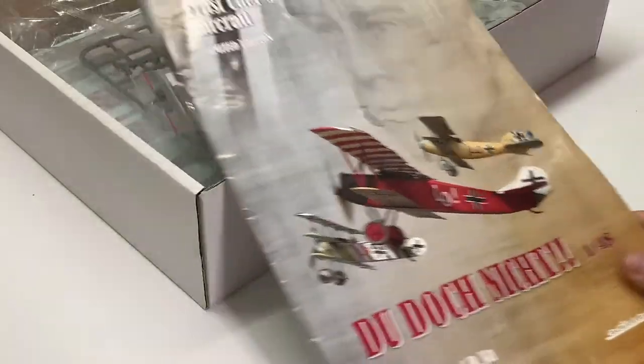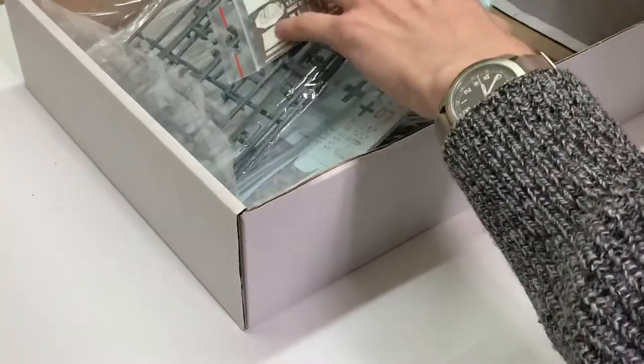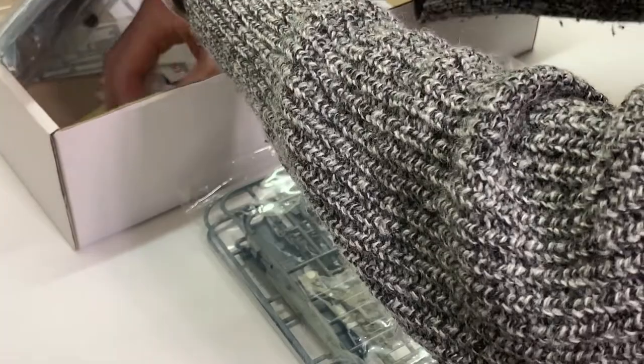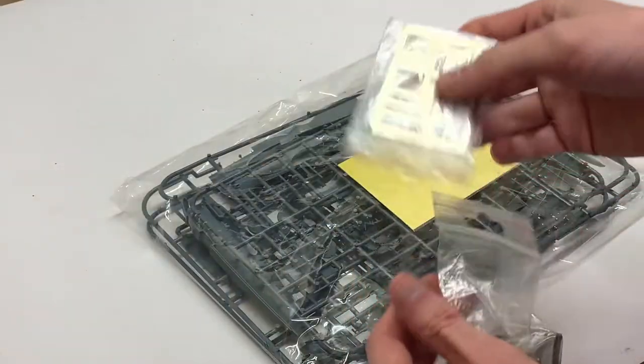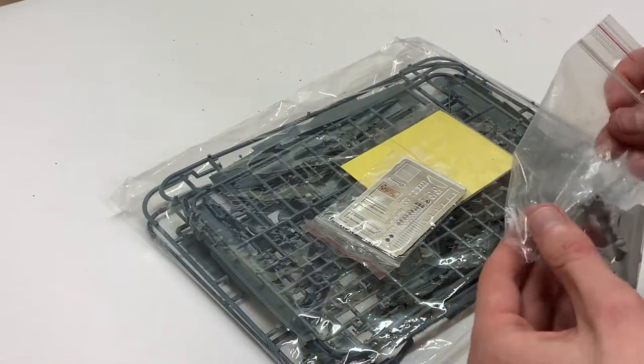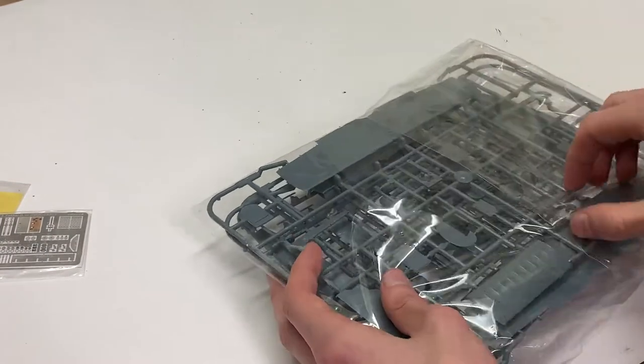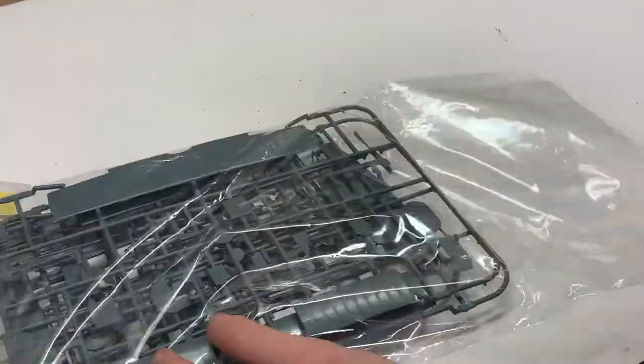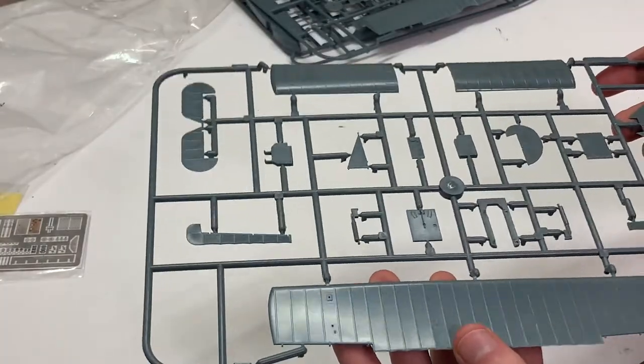This is the middle one right here. The kit itself is beautiful and comes with a bunch of extra goodies that typically Eduard kits come with. Opening up this kit we can see that it actually has four sprues, quite a bit for a small plane like this.